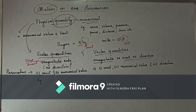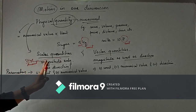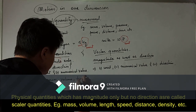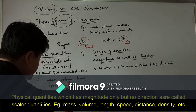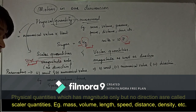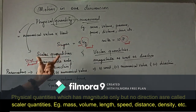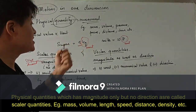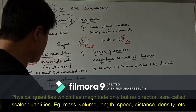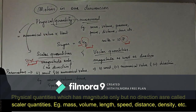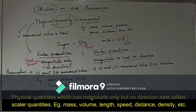Examples of scalar quantities are mass, volume, time, speed, distance, etc. — quantities which have magnitude only and no direction. For instance, the mass of sugar is 5 kg — no direction is implied. The volume of milk is 10 liters, and time like 12 o'clock — no direction is mentioned. These are scalar quantities.